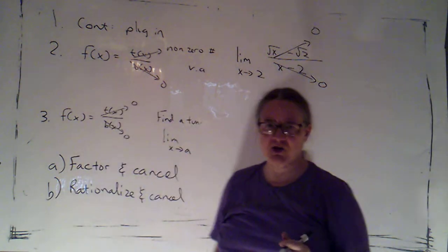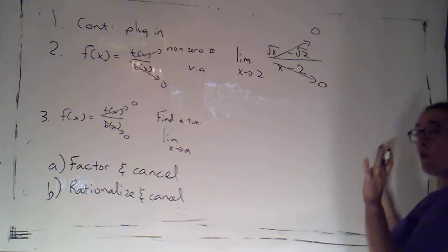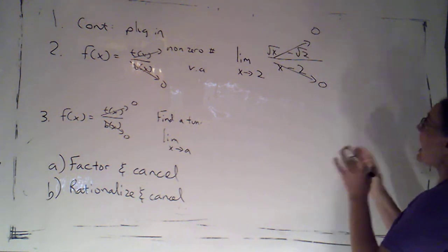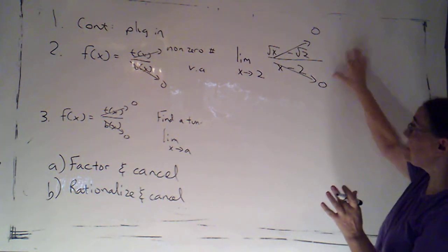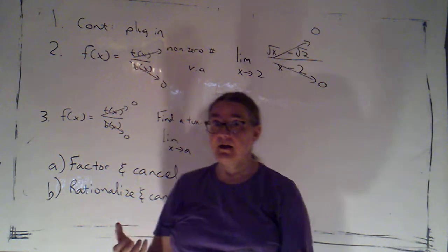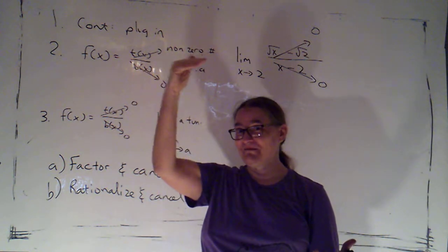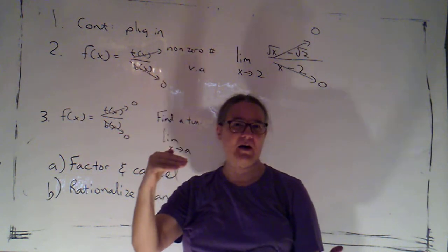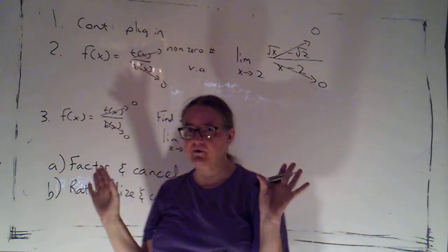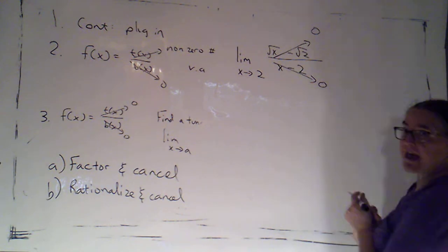So what do I mean by rationalizing here? Well, the idea is if one of my problem pieces involves roots, I am considering the top and the bottom to be problem pieces, because they're the things that are going to zero. And if they didn't go to zero, I wouldn't have a problem. I have a problem because I have this indeterminate form with zero on top and zero on bottom. So if one of the problem pieces involves roots, and I don't care whether it's on top or bottom, I'm going to try to rationalize that problem piece.